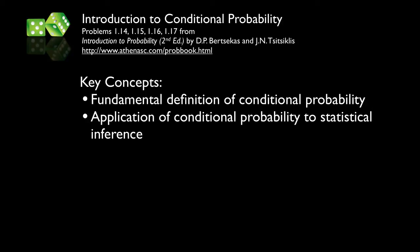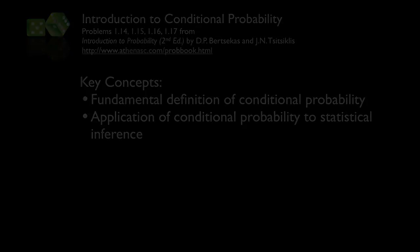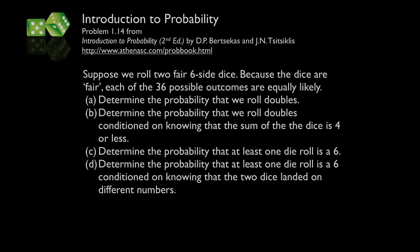To illustrate these important concepts, we'll look at four problems from the textbook Introduction to Probability by Dimitri Bertsekas and John Tsitsiklis. Let's begin with problem 14 from chapter 1. We consider a situation where we roll two fair, six-sided dice. Because the dice are fair, each of the 36 possible outcomes are equally likely.